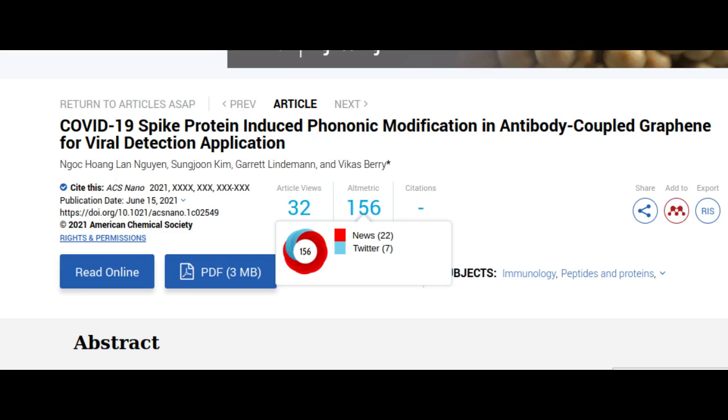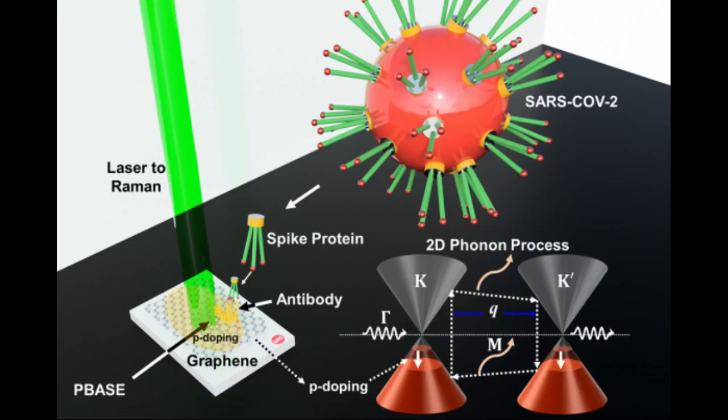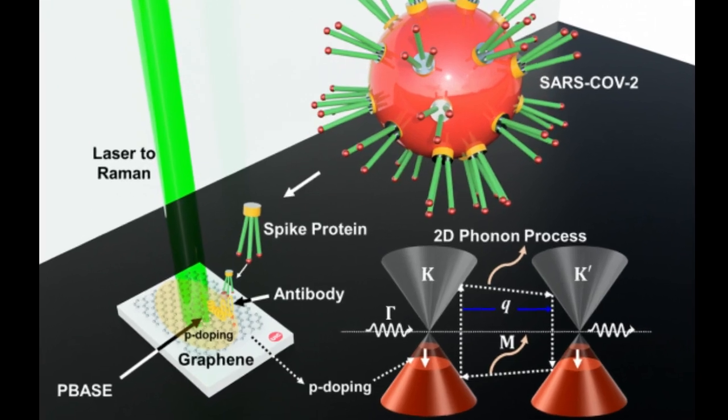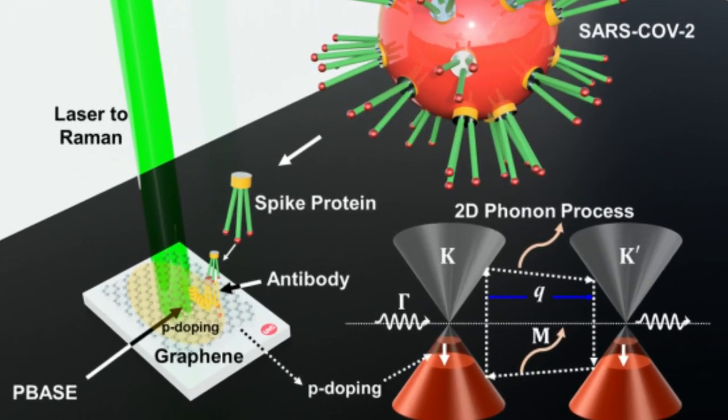There is a clear need in society for better ways to quickly and accurately detect COVID and its variants, and this research has the potential to make a real difference. The modified sensor is highly sensitive and selective for COVID, and it's fast and inexpensive.